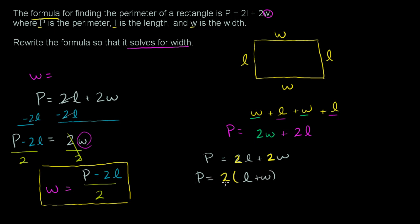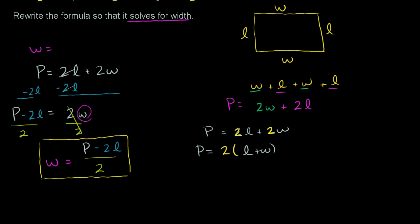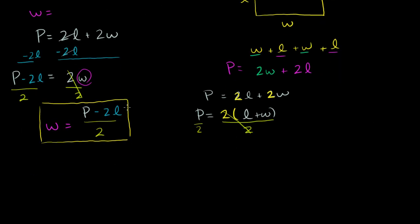Now, we can divide both sides of this equation by 2, so that we get rid of this 2 on the right-hand side. So if you divide both sides by 2, these 2's are going to cancel out. 2 times anything divided by 2 is just going to be the anything, equals P over 2. So we will get P over 2 is going to be equal to l plus w.